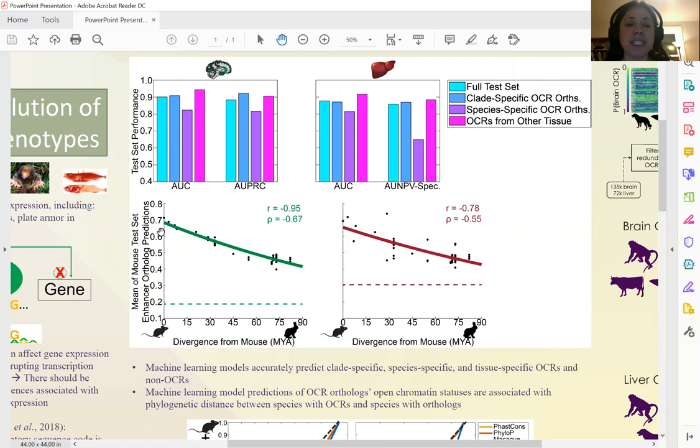In addition, we took our mouse open chromatin regions and identified their orthologs, and then we took the average prediction across their orthologs. What we found is that the orthologs in the species closely related to mouse tend to have an average that was high, and that this average decreased as we got further from mouse.